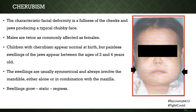Children with cherubism appear normal at birth, but painless swellings of the jaw begin to appear from the age of two to four. The swelling gradually enters a static phase around the age of seven, with no further increase in growth. The lesion then regresses on its own as the patient nears puberty. Cherubism generally presents as a bilateral, symmetrical lesion; swellings may involve the mandible alone or sometimes the maxilla as well.